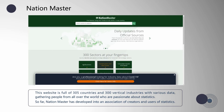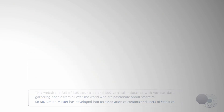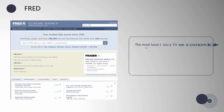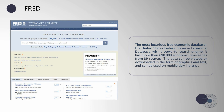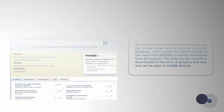FRED, the most robust free economic database, is the United States Federal Reserve Economic Database. With its powerful search engine, it has more than 690,000 economic time series from 89 sources. The data can be viewed or downloaded in the form of graphics and text, and can be used on mobile devices.